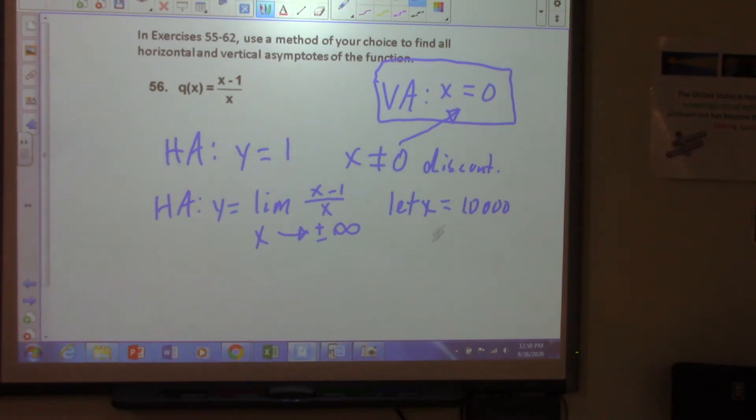Okay, that's right. So we'd have 10,000 minus 1, so we'd have 9,999 over 10,000, which is going to be very close to 1. So we can do that.